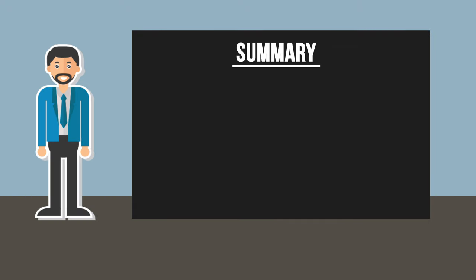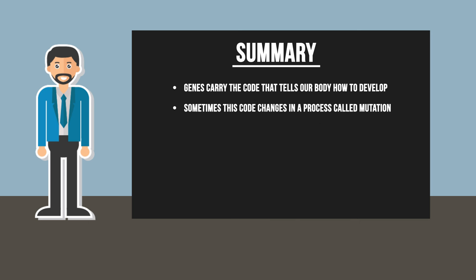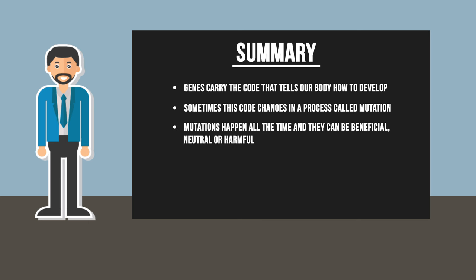In this video, you have learned that genes carry the code which tells our bodies how to develop, and that sometimes this code changes — a process called mutation. Mutations happen all the time; they can be beneficial, neutral, or harmful in their effects. Over time, and as a result of ongoing mutations, species evolve and change through natural selection.